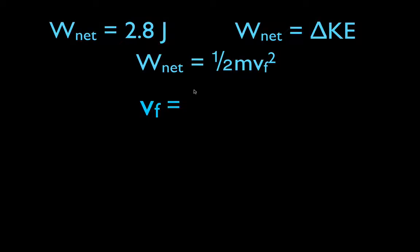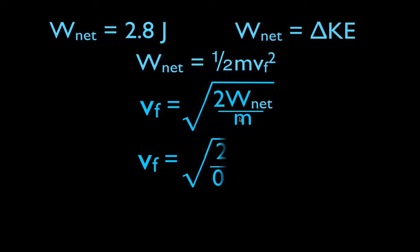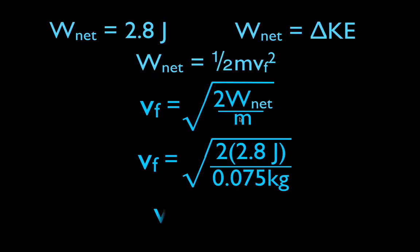And we get that the final velocity is equal to the square root of 2 times the net work, which we already know, divided by the mass, which we were given, 75 grams. So the final velocity is equal to the square root of 2 times 2.8, divided by 75 grams, which is 0.075 kilograms. That I convert to kilograms, basic units in the metric system. And you get that the final velocity of the dart, as it leaves the gun, is 8.6 meters per second.